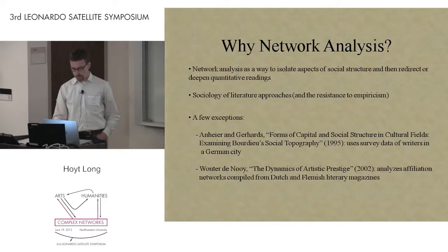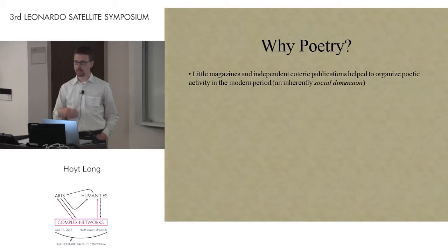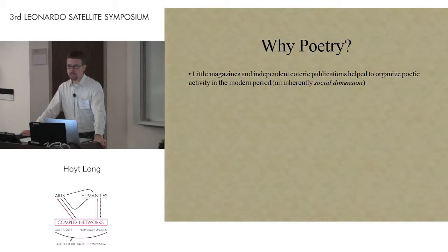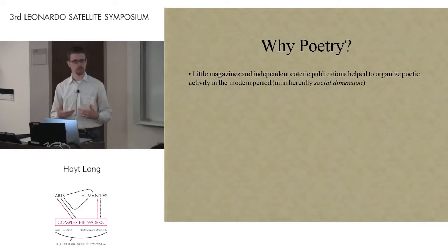The second question is: why poetry? Why do we choose this as a test case? The period we're interested in—basically the pre-war period, the late teens to the 30s—there was this boom in little magazines and independent coterie journals, which essentially helped to organize poetic activity in the modern period. These journals have an inherently social dimension. They bring together certain types of artists and poets based on their literary styles, their political affiliations, and so on.